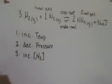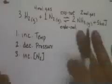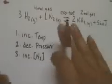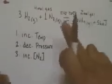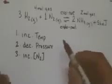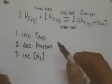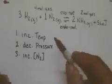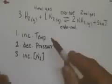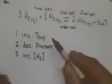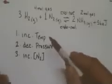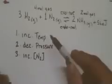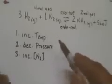Here we have Le Chatelier's Principle. To reiterate: for a system that is at equilibrium — and we're assuming this system is at equilibrium with forward and reverse rates equal right now — when you apply a stress, the system responds or shifts in such a way as to relieve the stress. The system will basically do the opposite of whatever the stress is. That's the golden rule of Le Chatelier's Principle.